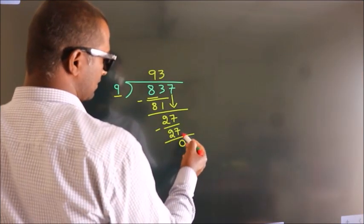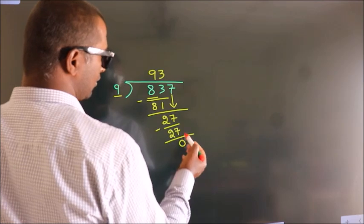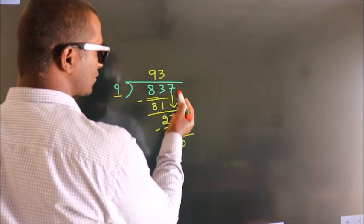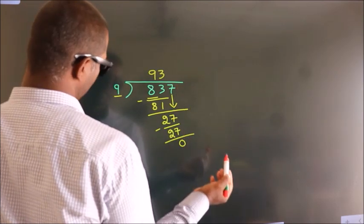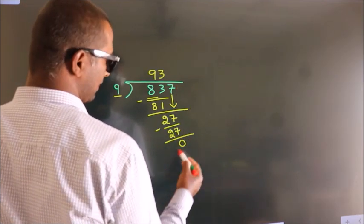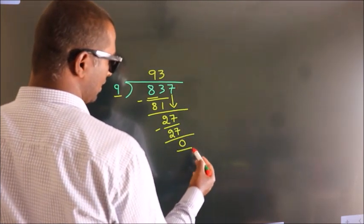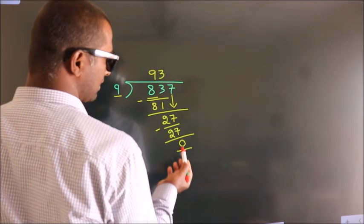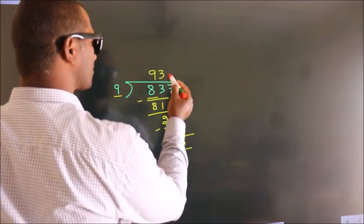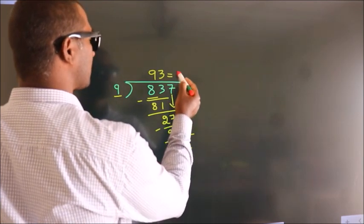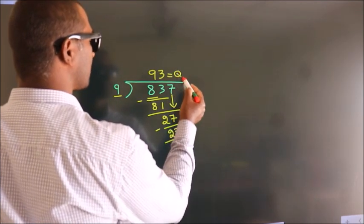After this, there are no more numbers to bring down. We got remainder 0. So this is our quotient.